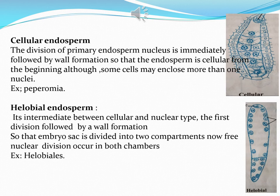In cellular endosperm, each compartment may have more than one nucleus. So the division of the primary endosperm nucleus is immediately followed by wall formation, making the endosperm cellular from the beginning, although some cells may enclose more than one nucleus. An example of cellular endosperm is Peperomia.